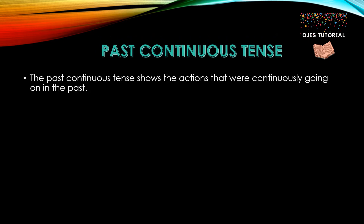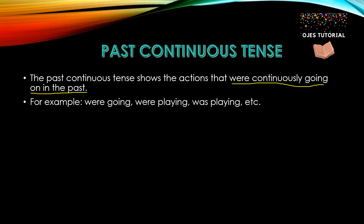The past continuous tense shows the actions that were continuously going on in the past. The present continuous tense shows actions going on in the present, and the past continuous tense shows actions that were continuously going on in the past. For example: were going, were playing, was playing, etc.